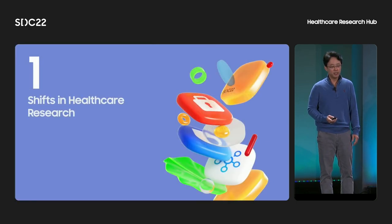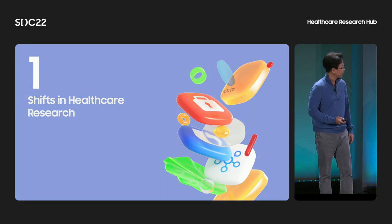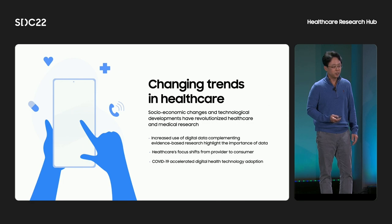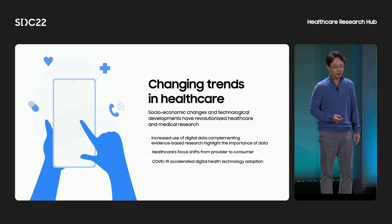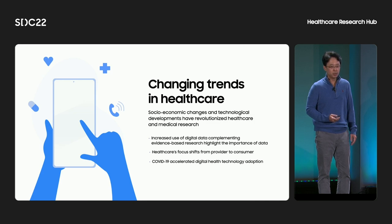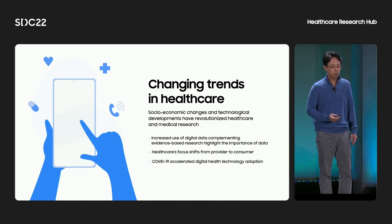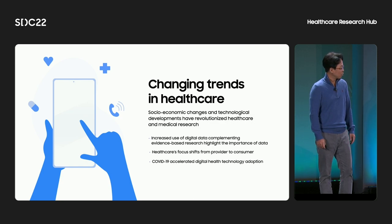In the past few years, we have seen a huge overtrend in accessibility of data to consumers. Our plan is to reform the healthcare research structure by considering three main socio-economic changes and technological development. First, increased use of digital data, complementing evidence-based research, highlights the importance of data from users as well as healthcare professionals. Second, healthcare's focus is shifting from provider to consumer. Third, the COVID-19 pandemic accelerated digital health technology adoption.